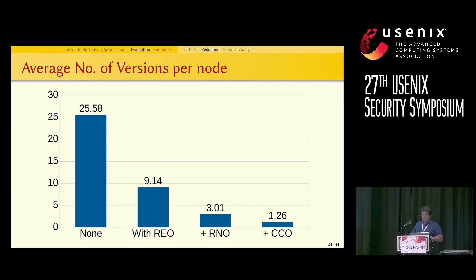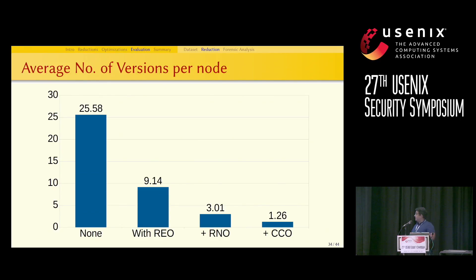Here are the average number of versions created by each optimization technique. With no optimization, each node generates 25.58 versions. Adding redundant edge optimization reduces this to 9.14 versions per node. Adding redundant node optimization brings it down to 3.01, and with cycle collapsing optimization, we reach 1.26 versions per node.